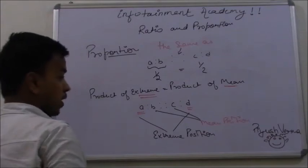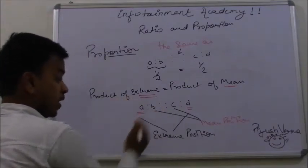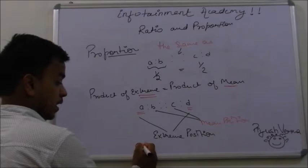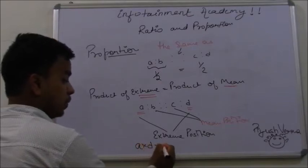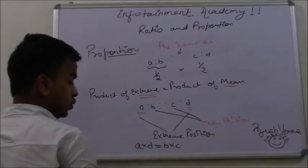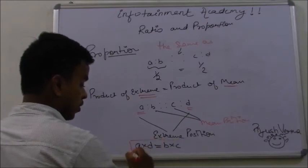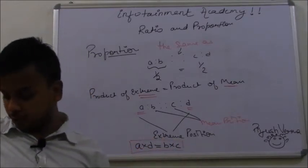Then by the formula, product of extremes should equal product of means. We conclude that A into D should equal B into C. This is the general formula to solve any problem based on proportion.